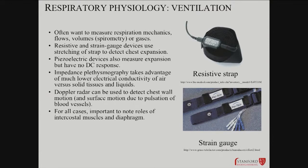Intercostal muscles can fail in different settings — if you have a rib fracture or disrupt the intercostal muscles, you can have localized impairments in inflation of the chest wall, causing local problems with impaired ventilation.